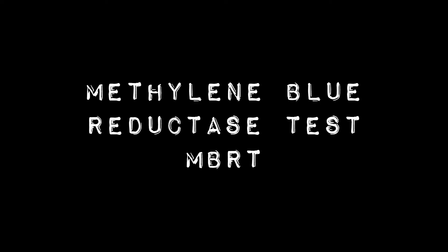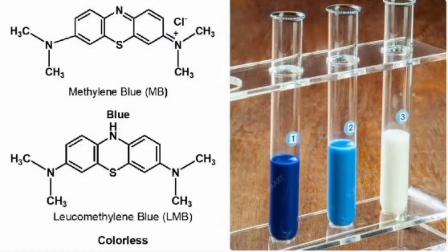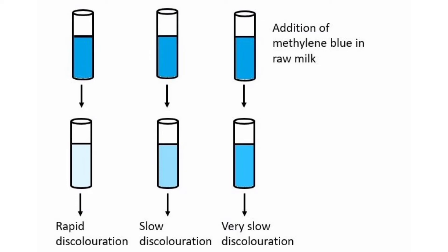MBRT — Methylene Blue Reductase Test. It is a rapid method to determine the microbial load. Using this test we can identify the quality of milk depending upon the color-retaining property. The speed of reduction of methylene blue color is directly proportional to the volume of bacteria present in the milk sample.